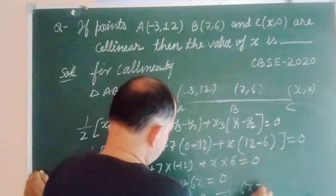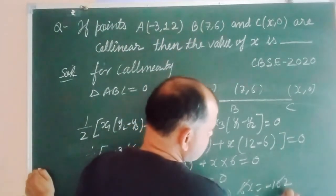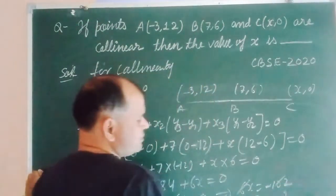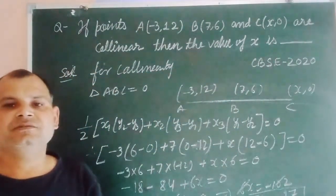6x equal to minus 102. So 6 into 17 is 102, therefore value of x is minus 17.